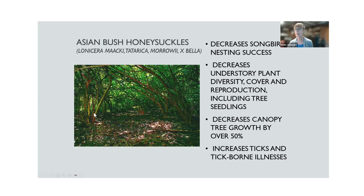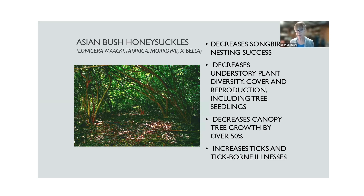It also decreases understory plant diversity, cover, and reproduction — including tree seedlings. It stops the next forest from establishing, due both to the intense shade cast to the forest floor and to allelopathy — toxic chemicals that Asian bush honeysuckle exudes that keep other plants from growing. In addition, the big trees that tower above these shrubs have their growth reduced by over 50%, because the honeysuckle has a more extensive root system and takes water and nutrients away from those big trees.